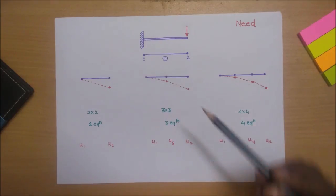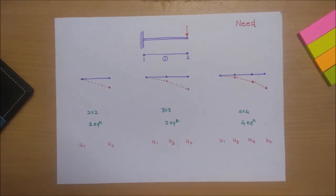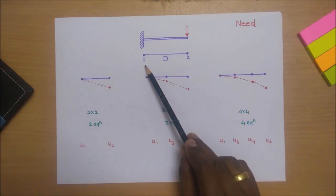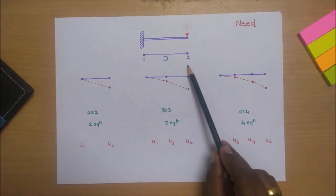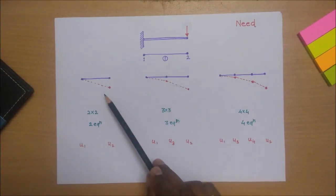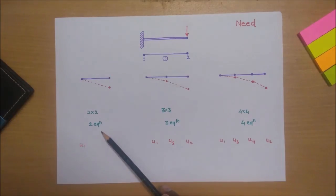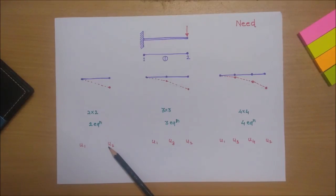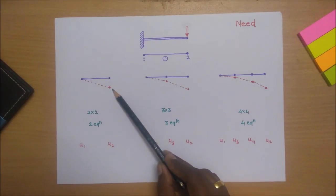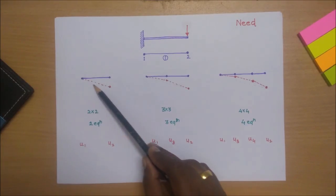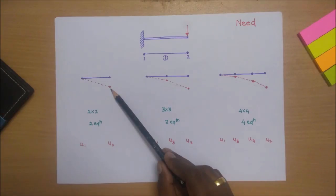We will take one example — a simple cantilever beam discretized into two nodes and a single element. For this example, we get a 2x2 global stiffness matrix, giving us two equations. After solving, we get two deformations u1 and u2 at node one and node two. We join these two points linearly to get the final deformation of the cantilever beam.